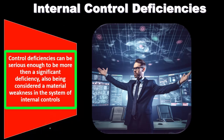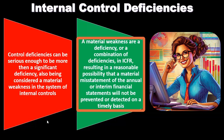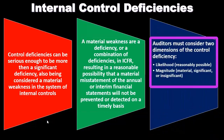Control deficiencies can be serious enough to be more than a significant deficiency, also being considered a material weakness. A material weakness is a deficiency or combination of deficiencies in ICFR resulting in a reasonable possibility that a material misstatement of the annual or interim financial statements will not be prevented or detected on a timely basis.